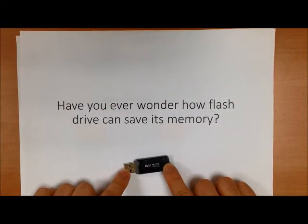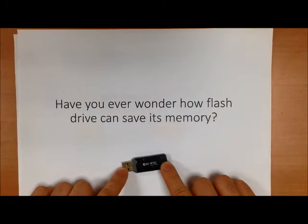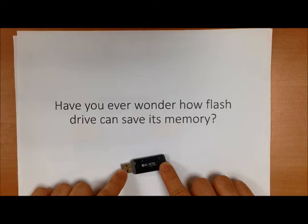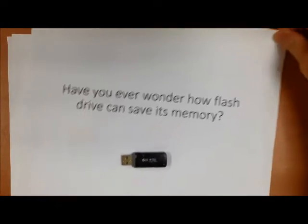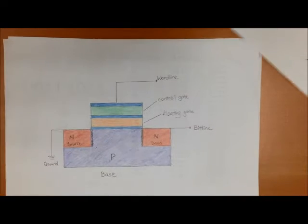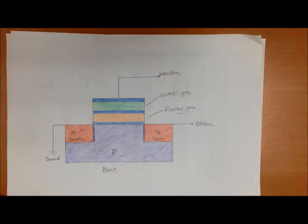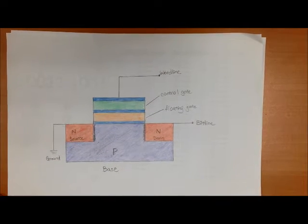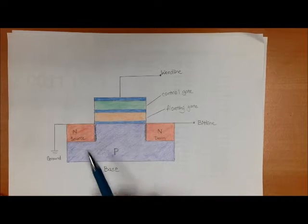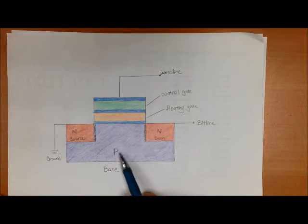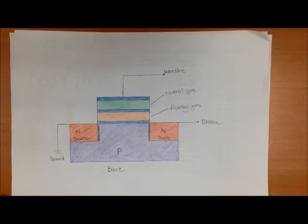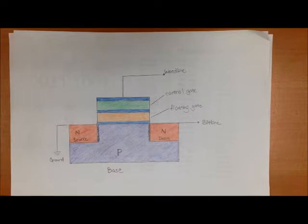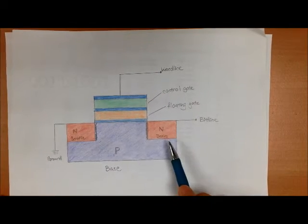Have you ever wondered how a flash drive can save its memory? A flash drive actually relies on the technology of the floating gate transistor. This is how a floating gate transistor may look like. For this example, we are using a NPN transistor which serves as a switch to pass current from the source to the drain.